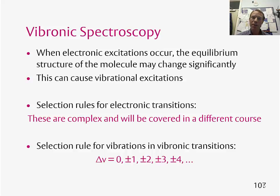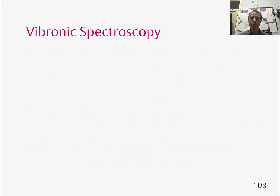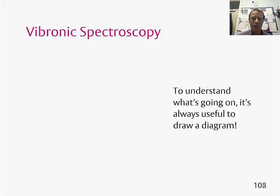This means that if you measure an electronic spectrum, there's going to be a whole series of vibrational lines within it. To understand what's going on in a spectrum and to start analysing the peaks, it's always useful to draw a diagram.